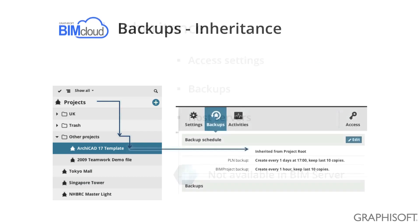Here is an example of the backups. On the screen you can see that the ARCHICAD 17 template project has been selected, and the backup schedule says that it is inherited from the project root. If you look on the left-hand side, you will see the path where the inheritance was working its way down. At any level it is possible to override these default settings with a local one, and from that point any lower elements in the tree will inherit this new setting.